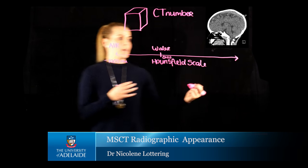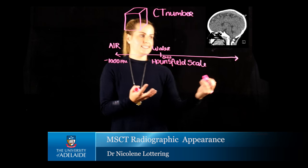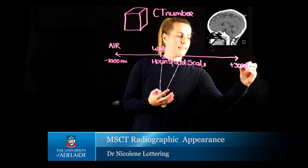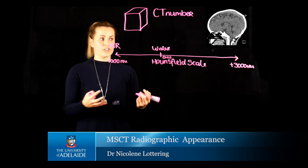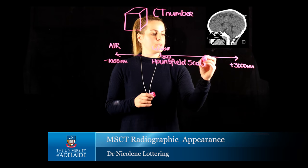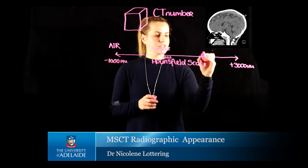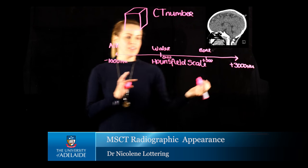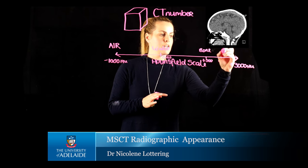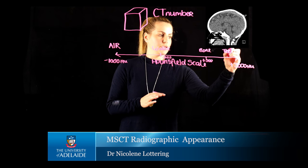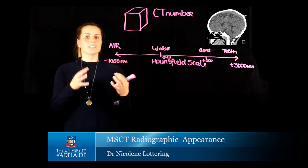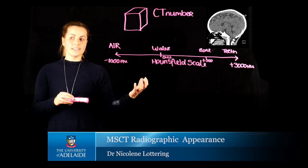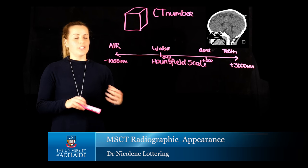On the other side of the spectrum, structures that have a high density, such as bone, are in the positive range and appear as white structures — they really stand out. Bone appears with values approximately greater than 500, and teeth are on the extreme end of the spectrum, from about 1000 to 3000. Any hard substances such as bone, teeth, metals, and calcifications have a high density, so they come up as white.